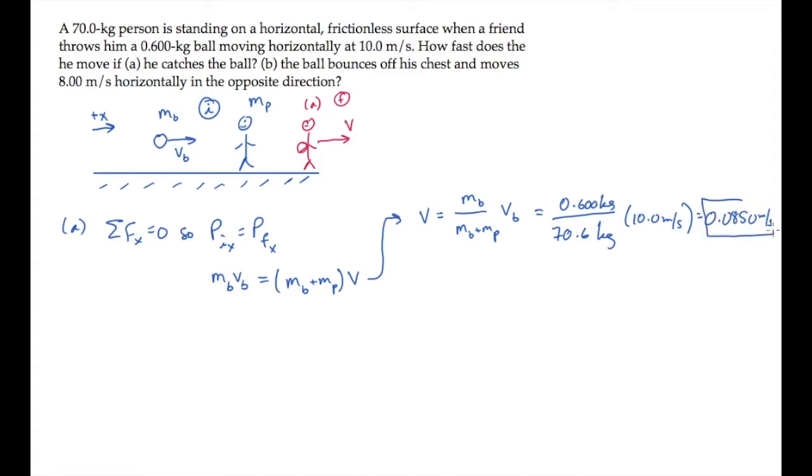Part B asks what happens if instead of catching it, the ball bounces off the person's chest and goes backwards in the opposite direction at eight meters per second. We'll call that v sub r, the speed in the reverse direction. And we're asked to find how fast the person drifts to the right at speed v.